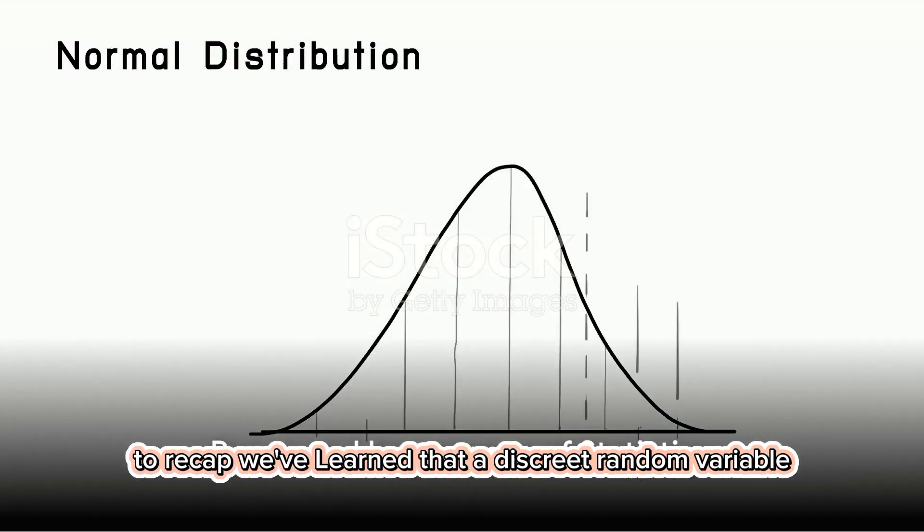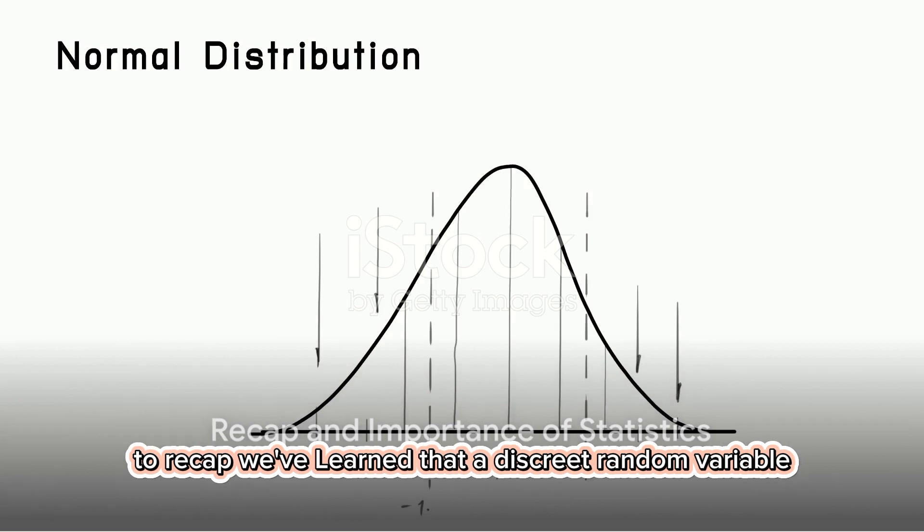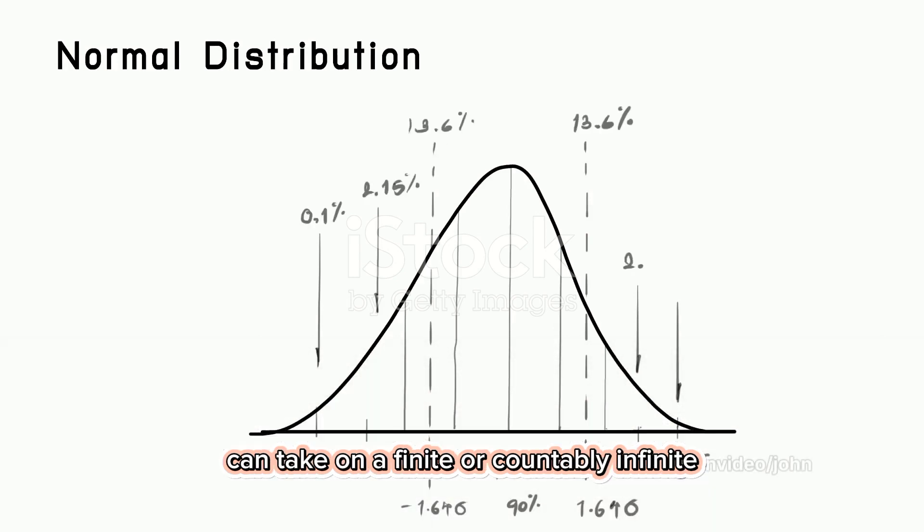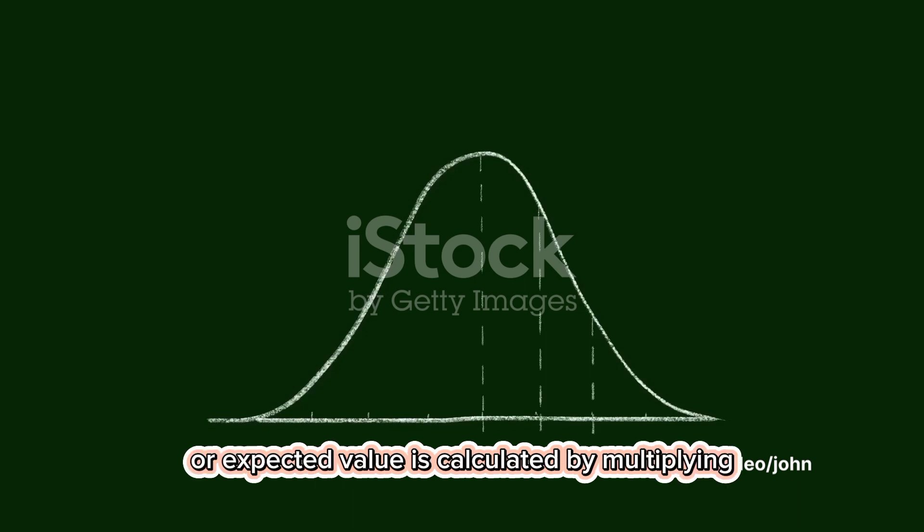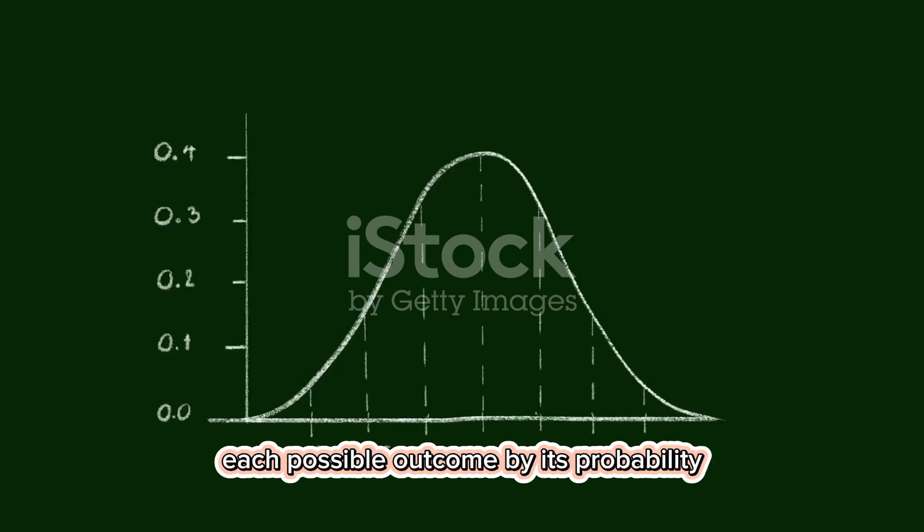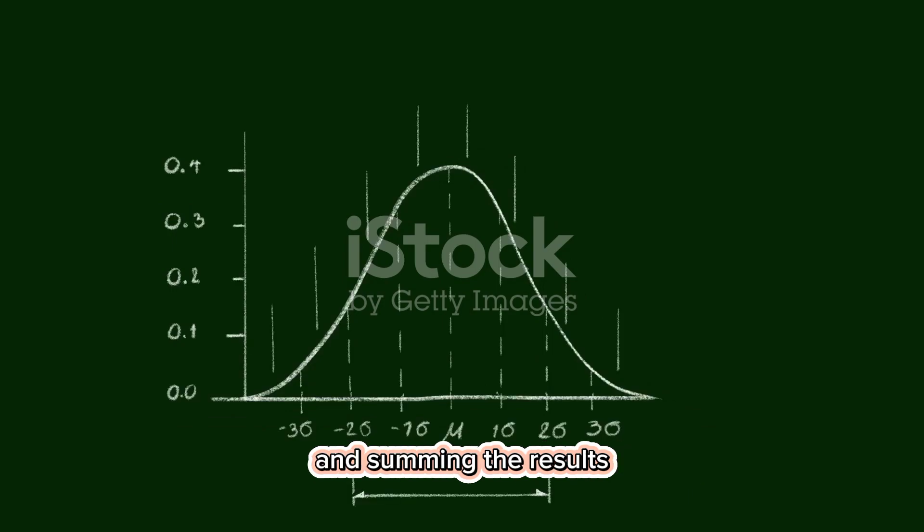To recap, we've learned that a discrete random variable can take on a finite or countably infinite number of values. We've seen that the mean or expected value is calculated by multiplying each possible outcome by its probability and summing the results.